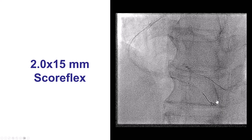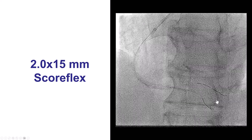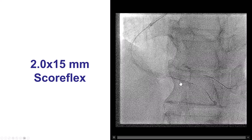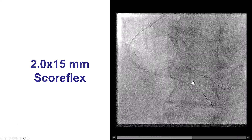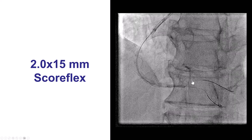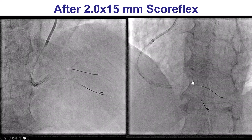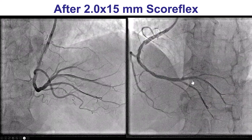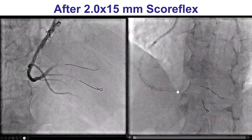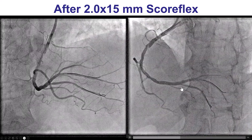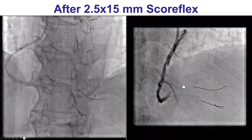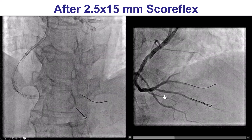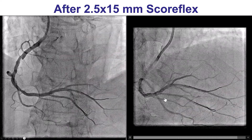We then did balloon angioplasty. For side branches, we often like to use scoring balloons, so we used a ScoreFlex here to minimize the risk of causing a dissection into the side branch. We used a 2.0 and 2.5 mm ScoreFlex. The 2.0 didn't really significantly improve the lesion, so we used the 2.5 mm, and after that the PDA does look, at least angiographically, fairly good.